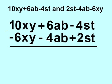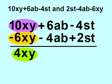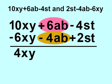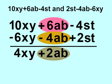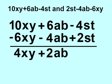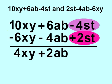Keep in mind, even though this is an addition problem, when we see a positive number and a negative number, we will be subtracting the negative number. So 10xy minus 6xy equals 4xy. 6ab minus 4ab equals 2ab. Negative 4st plus 2st equals negative 2st.